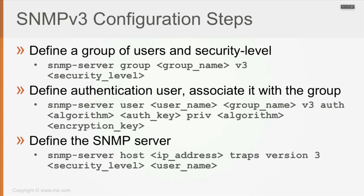The group is used to define the security level of users associated with it. At the user level, you associate the user with the group and define authentication and encryption algorithms to match the security level of the group. Then lastly, you define the SNMP server by saying SNMP server host, the IP address of the SNMP server. You can optionally use the traps keyword — if you don't, you'll only receive SNMP get and set actions, but no traps will be sent to the server. You also define version 3, the security level, and the username.